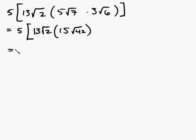So what we can do now is we can multiply the 13 times the 15. So we'll write our 5 here, and the 13 times the 15, you'll get 195. And the 2 times the 42 is going to be rad 84. 5 times 195 is going to give you 975.